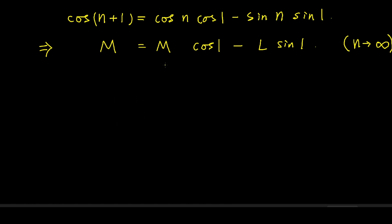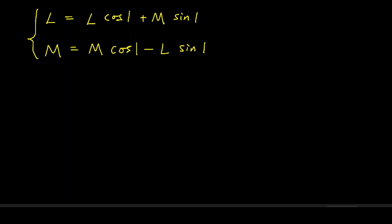So now we have two equations. Let's put them together to form a system of equations. Of course, we can simplify them by rearrangement. This gives us 1 minus cosine of 1 times L minus sine of 1 times M equals 0. And also minus sine of 1 times L plus 1 minus cosine of 1 times M equals 0.